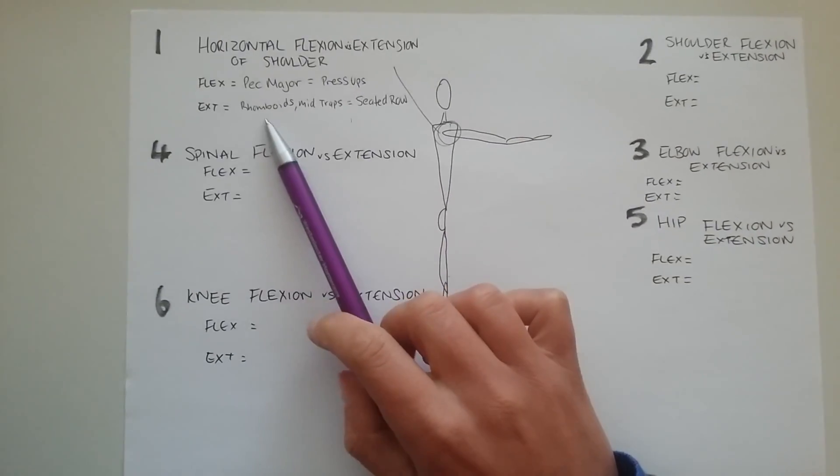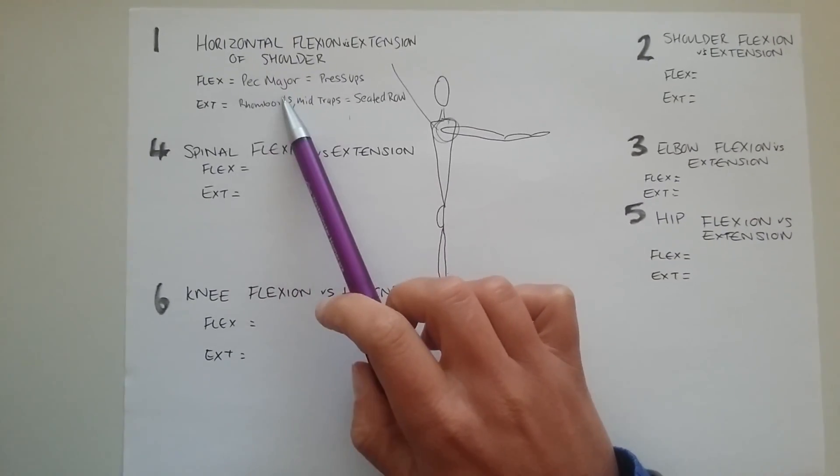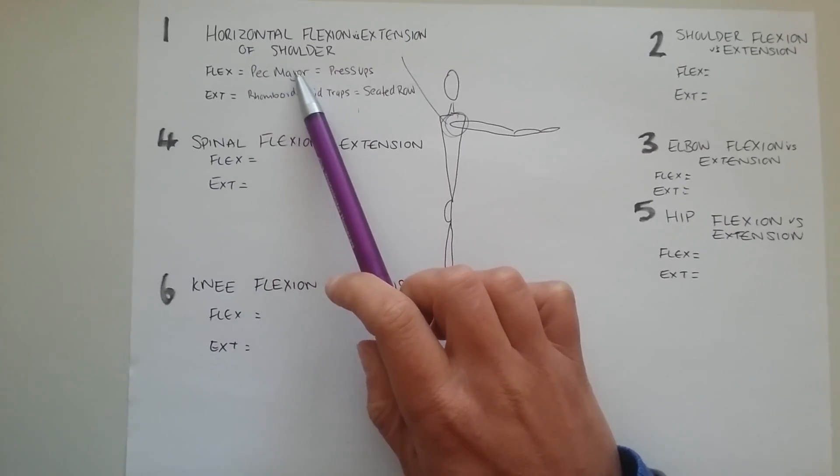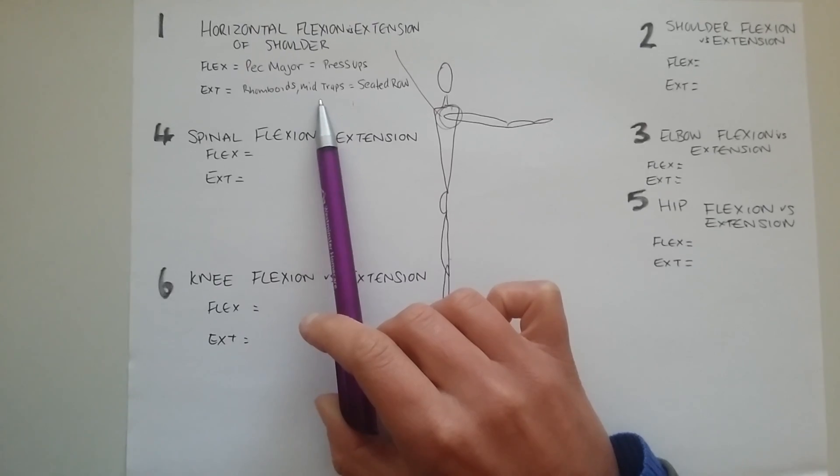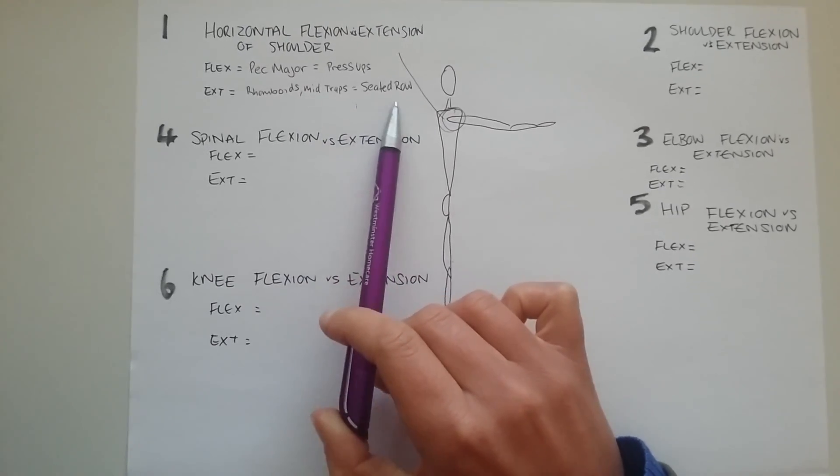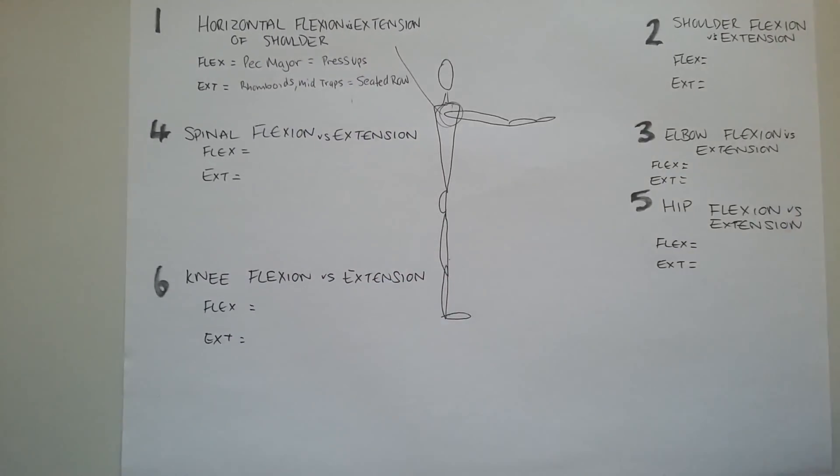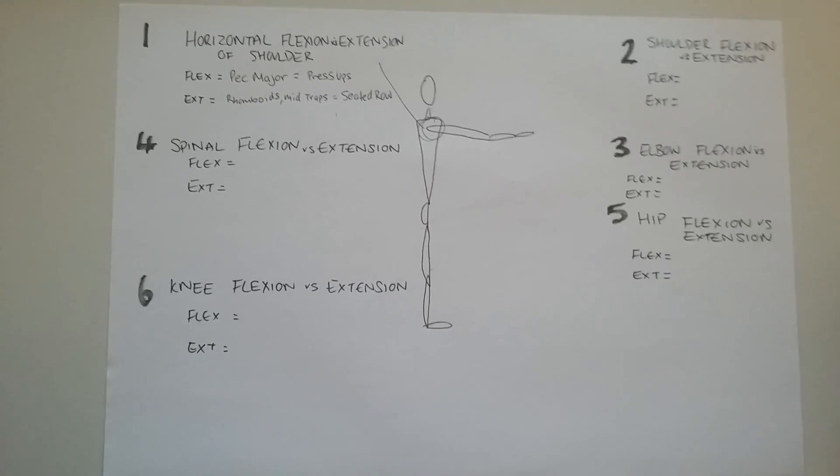So the way to work through this is to then look at these. What other exercises have pec major in them? And then you can write those down. Which other exercises work rhomboids and mid-traps? Write all those down and then you can pick between the two when you're deciding your superset. So that's my big hint for that.